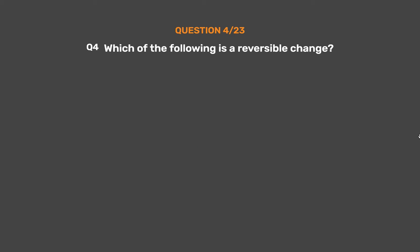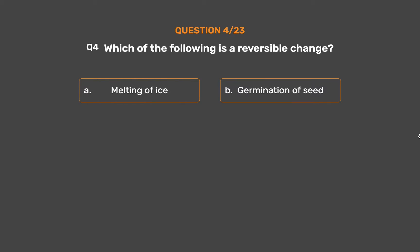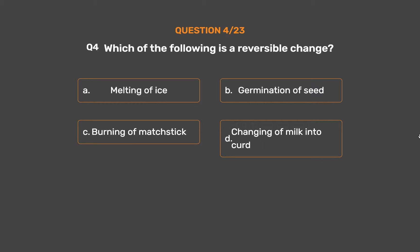Question number 4. Which of the following is a reversible change? Option A: Melting of ice. Option B: Germination of seed. Option C: Burning of matchstick. Option D: Changing of milk into curd.